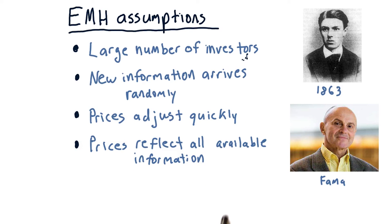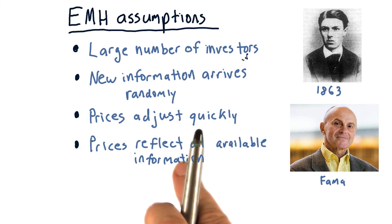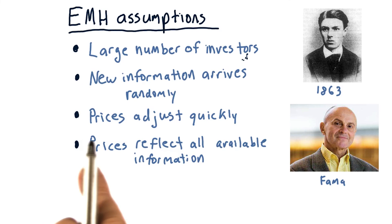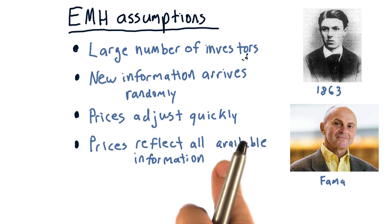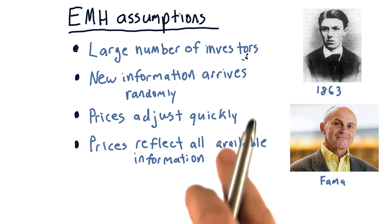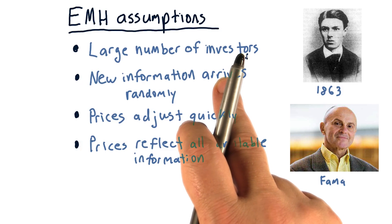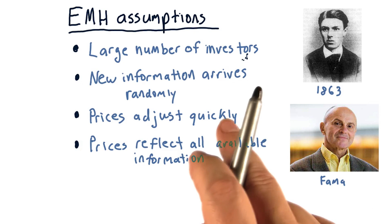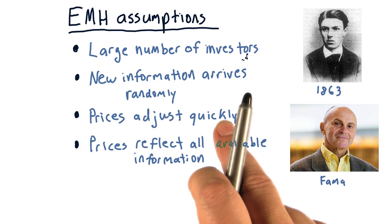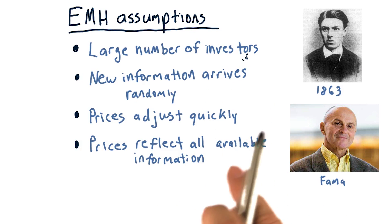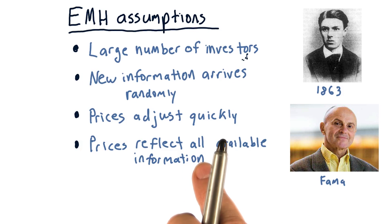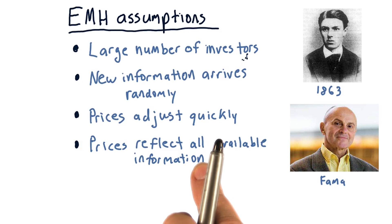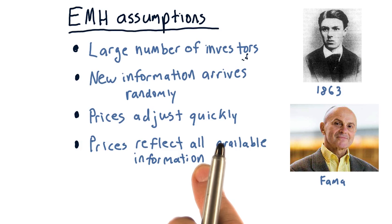Finally, the Efficient Markets Hypothesis assumes that the current price reflects all available information. In other words, all this information that's trickling in is acted upon by the investors. The price adjusts quickly to that information, and the current price reflects all information about that stock.